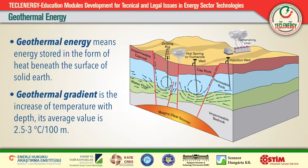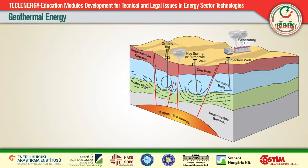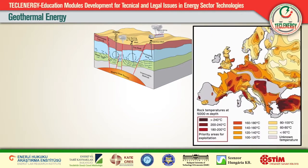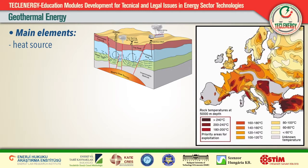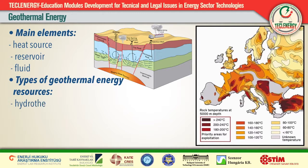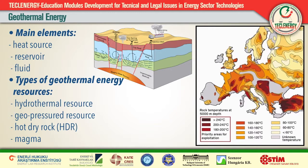In Turkey, the geothermal gradient is almost one and a half times as high as the world average and represents one of the country's natural treasures. Geothermal energy has three main elements: the heat source, which can be magma or the Earth's normal temperature at a given depth; the reservoir, which is the volume of hot permeable rocks generally covered by a layer of impermeable rocks; and the fluid, which is generally meteoric water in liquid or vapor phase, often carrying chemicals and gases such as carbon dioxide and hydrogen sulfide.